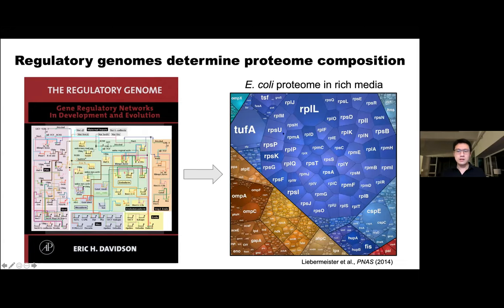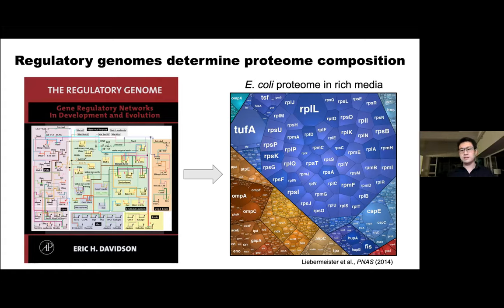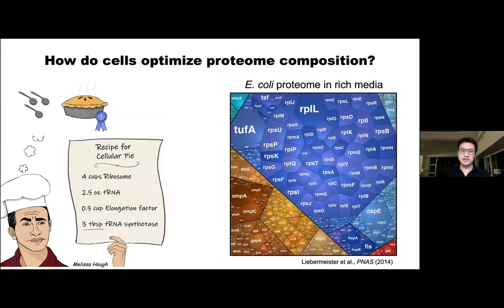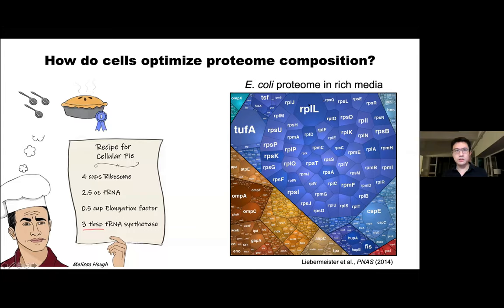For example, this is an E. coli proteome in rich media, where the size of each polygon corresponds to the abundance of each protein. Think about how complex this problem is for the regulatory genome to tune these 4,000 knobs of protein expression across all these different scales. If you have experience making a pie, it's very difficult to strike the right proportions without the right recipe — and whatever recipe works reflects the underlying physics and chemistry, which we know a lot about for individual proteins but often not in aggregation as in the cell.